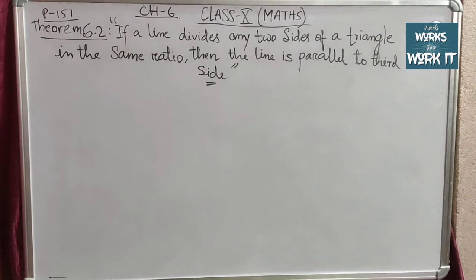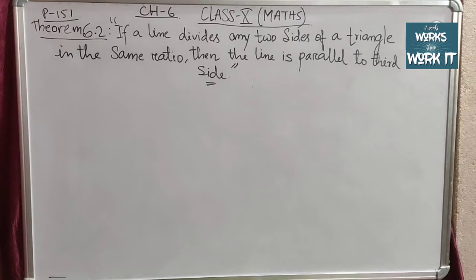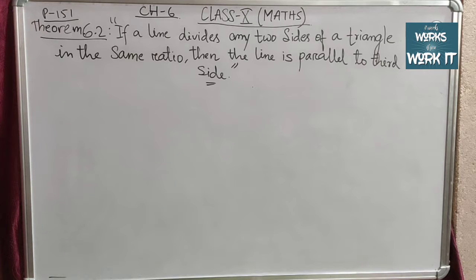Hello students, today we will be doing the second theorem of chapter 6, that is Triangles. It states that if a line divides any two sides of a triangle in the same ratio, then the line is parallel to the third side. Before coming to this, we will have a little revision of the first theorem, that is the Basic Proportionality Theorem.